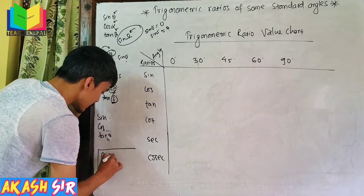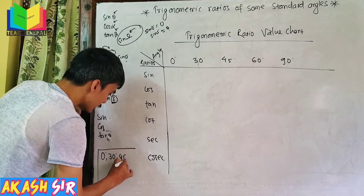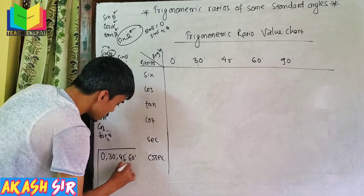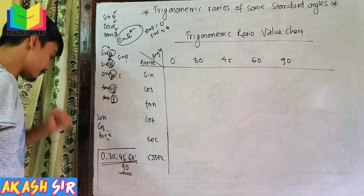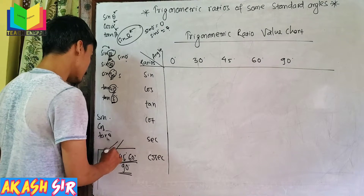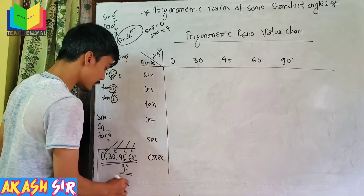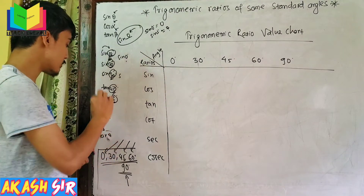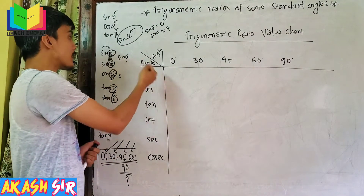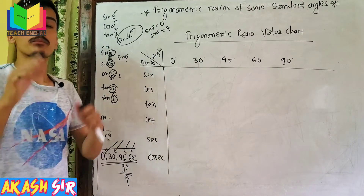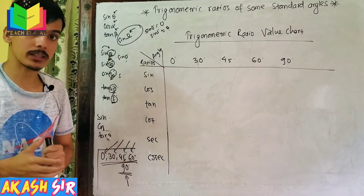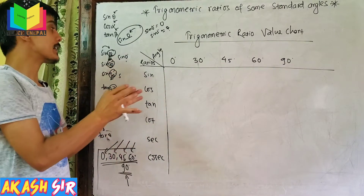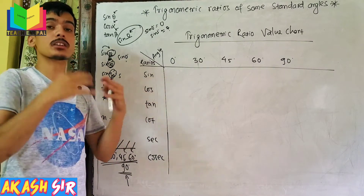We have standard angles: 0 degrees, 30 degrees, 45 degrees, 60 degrees, and 90 degrees. These are the standard angles. We have a fixed value for each standard angle.